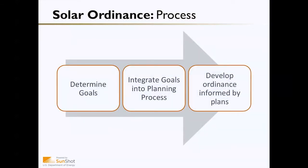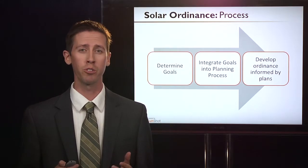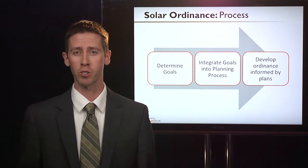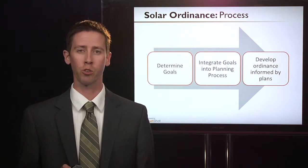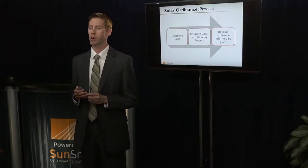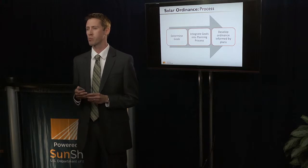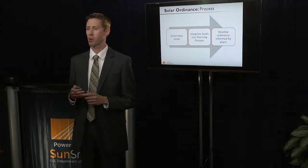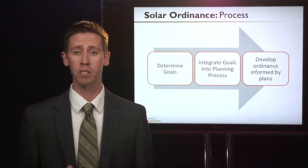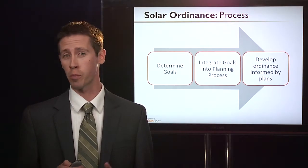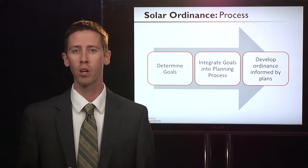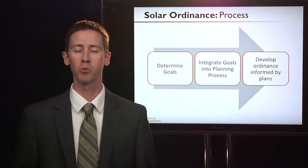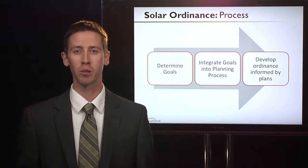There is basically a three-step process. First, determine what the community's goals are — how much solar do we want installed, and what types of solar installations? Do we want rooftop systems or ground-mounted systems? Then, how do those goals integrate into the planning process? Most communities go through some form of master planning, and solar can be incorporated into that. Then you develop the ordinance informed by plans: which areas are suitable for solar, and how does that relate back to the community's planning process?